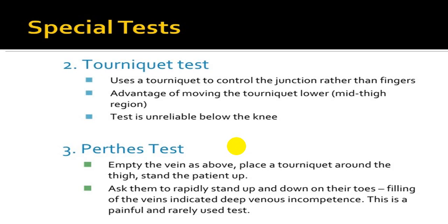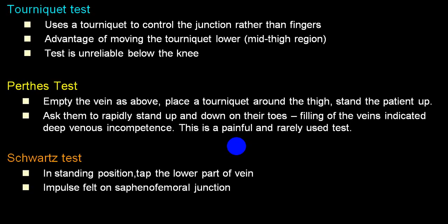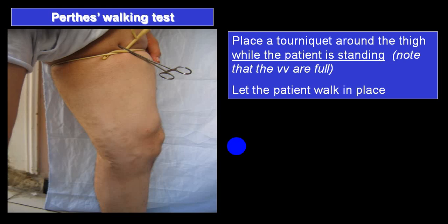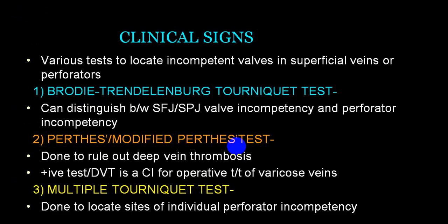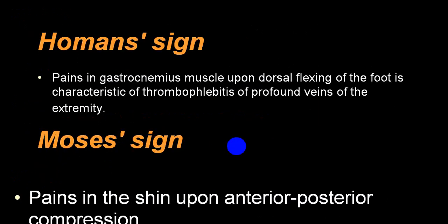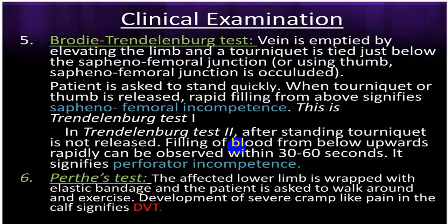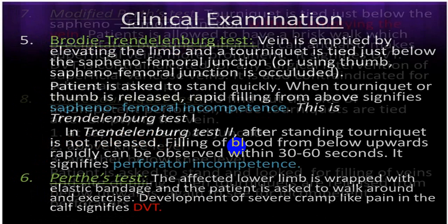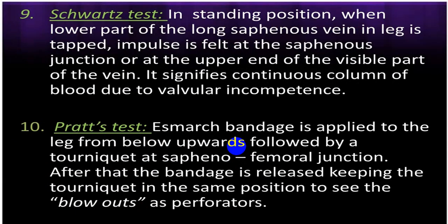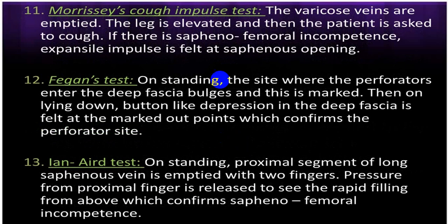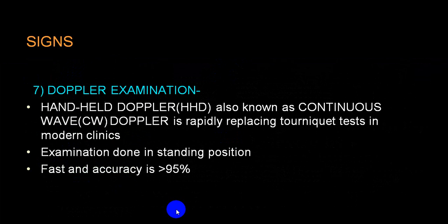Tests are used to assess deep veins (Perth test, modified Perth test), communicating veins (Trendelenburg, multiple tourniquets, two-finger test), and superficial veins (squash test, chair VF test). Handheld Doppler and continuous wave Doppler can also be used for examination.